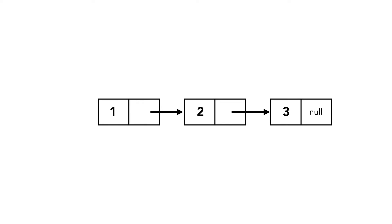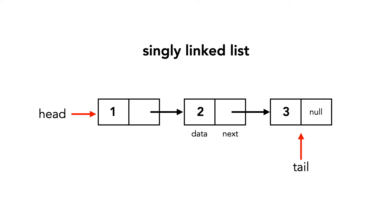Here is an example of a linked list. Each object has both data and a next pointer. Linked lists have a pointer to the first node, called the head. It's common to also have a tail pointer that points to the last object in the list. This list is a singly linked list, as the pointers are in one direction.